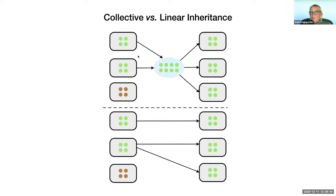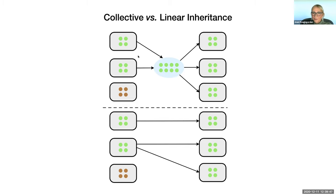It doesn't matter whether the genomes for each individual in the next generation come from a given ancestor or from a collection of common ancestors - repeated selection on selected subsets of parental genotypes leads to Darwinian evolution. There is selection, there is inheritance, and at the species level there is descent with modification. It's not Mendelian, so it's not consistent with neo-Darwinism or the new synthesis, but it is definitely Darwinian and based on selection with an expanded view of inheritance.